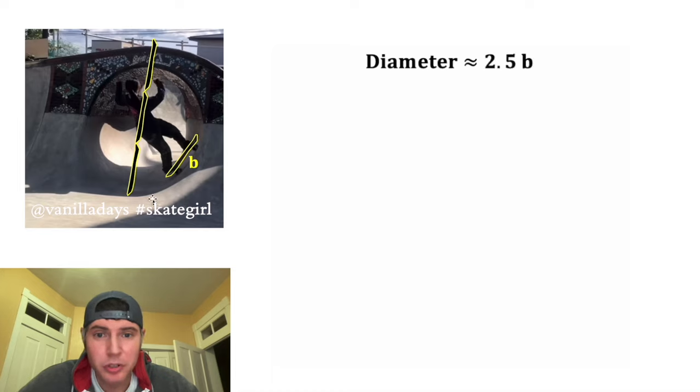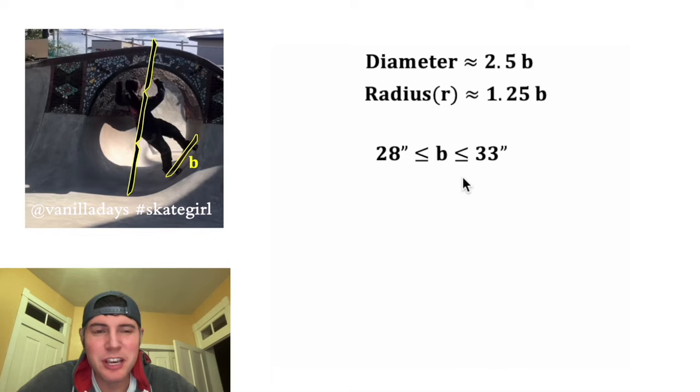the circle is equal to two and a half boards, or 2.5b, and that means the radius will be equal to half of that, which is 1.25b. Now what do we know about b? Well, skateboards tend to be between 28 inches and 33 inches long, so b is most likely between those two lengths.